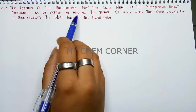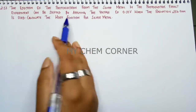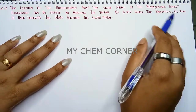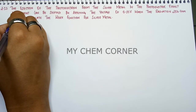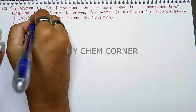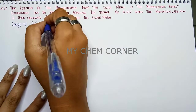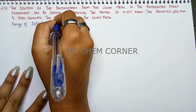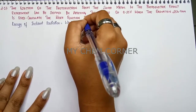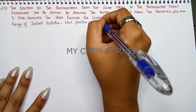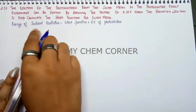We need to calculate the work function. First, let's find the formula where we can calculate work function with nanometer involved. The equation is: energy of incident radiation equals work function plus kinetic energy of photoelectron.